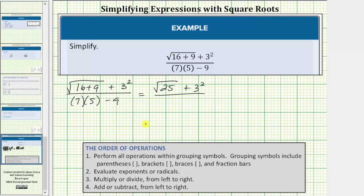Looking at just the denominator, we have multiplication and subtraction. We multiply before subtracting. Seven times five equals thirty-five. In the denominator we have thirty-five minus nine.